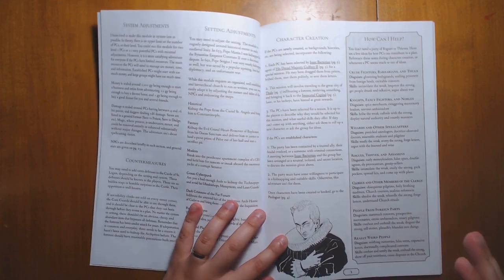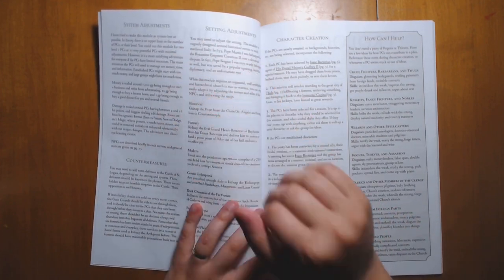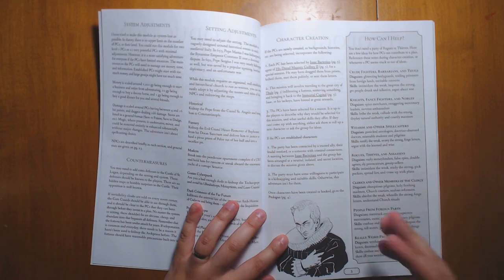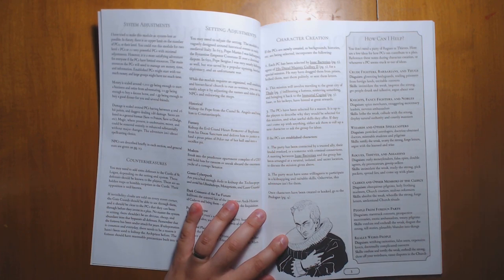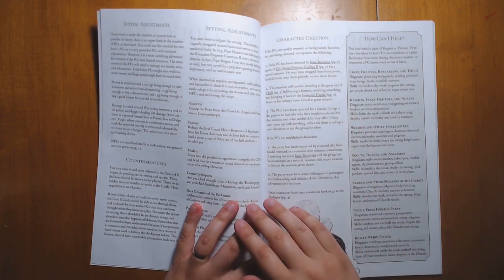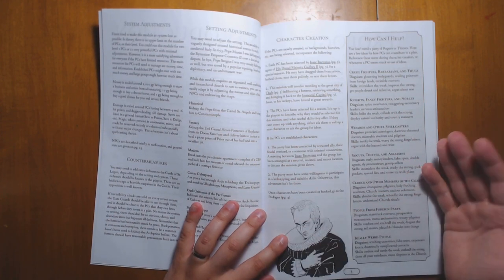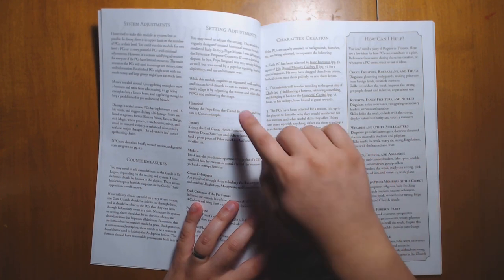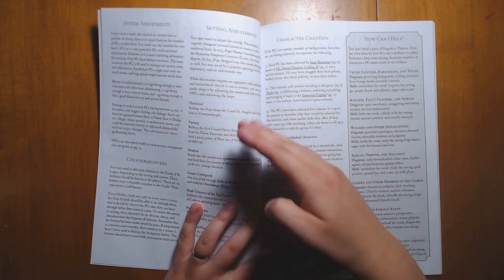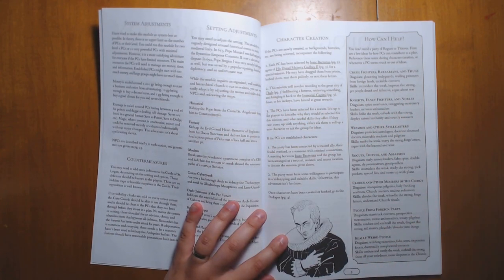So it goes into a little bit about what systems you might want to use for it. This is very system neutral, though it's assumed for old-school games. Some possible adjustments. This is about kidnapping an archpriest, which is essentially a fantasy version of the Pope. But you can set it, of course, in an actual historical era, or in other eras if you want to, with a little bit of re-skinning.